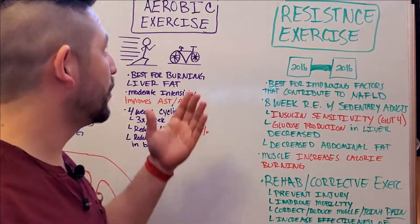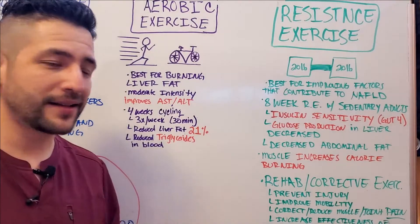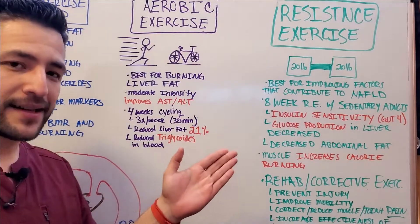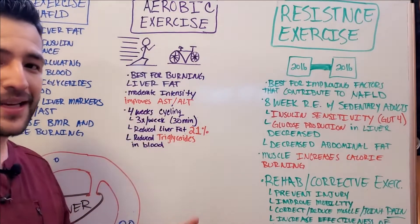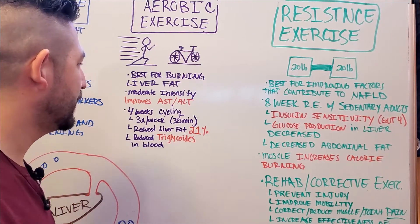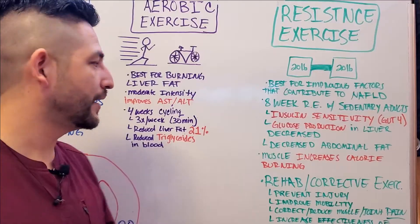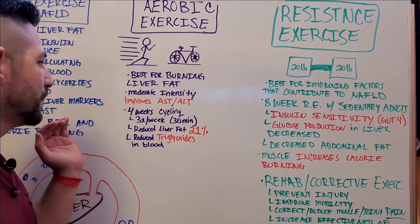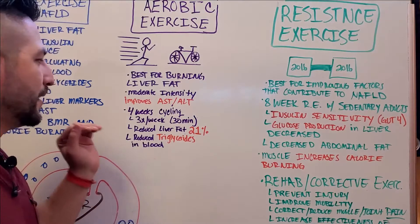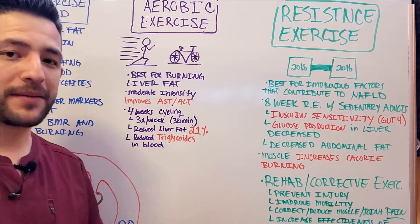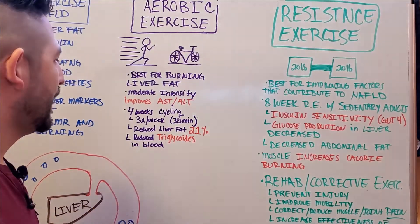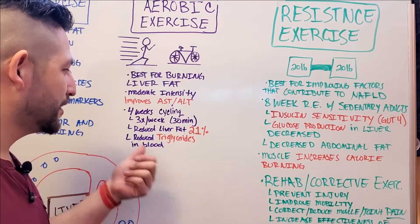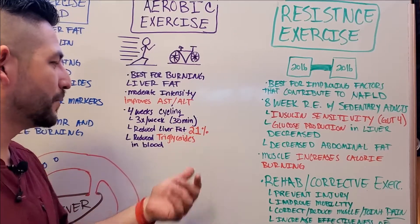According to the research in several studies, aerobic exercises like running, sprinting, and cycling are actually really good at burning liver fat, especially when done at moderate intensity. This has been shown to improve things like AST and ALT levels in the blood, which are often elevated in fatty liver or any stage of non-alcoholic fatty liver disease, as well as metabolic syndrome. In one study, a group of adults went through a four-week cycling program — cycling three times a week for 30 minutes per session — and the result was a reduction in liver fat of up to 21% in just four weeks.